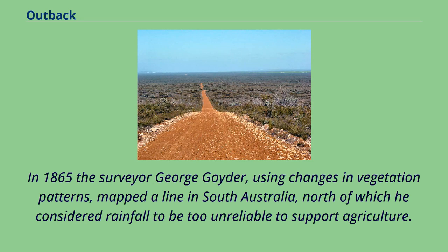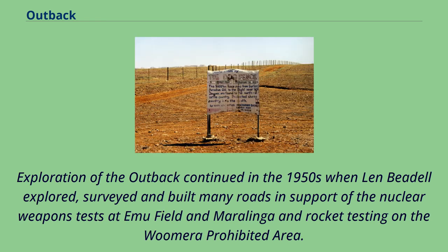In 1865 the surveyor George Goyder, using changes in vegetation patterns, mapped a line in South Australia north of which he considered rainfall to be too unreliable to support agriculture. Exploration of the outback continued in the 1950s when Len Beadell explored, surveyed and built many roads in support of the nuclear weapons tests at Emu Field and Maralinga and rocket testing on the Woomera prohibited area.